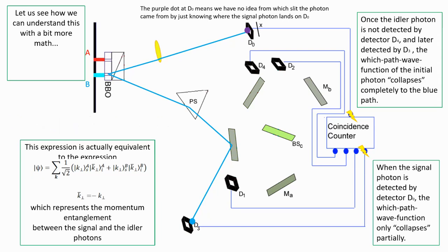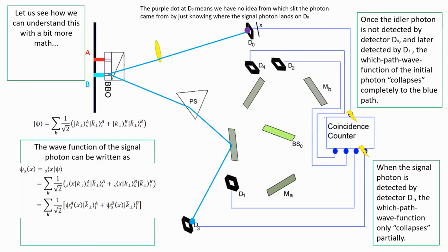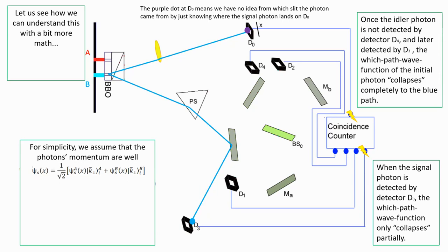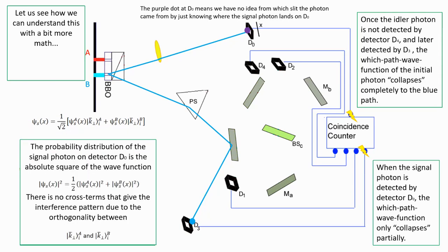The position space wave function of the signal photon can be written as... For simplicity, we assume that the momentum of the photons are well defined, and therefore we can remove the summation sign. The probability distribution of the signal photon on detector D0 is the absolute square of the wave function. We see that the cross term for the interference pattern is absent in the expression. This is due to the orthogonality between the terms KIA and KIB.